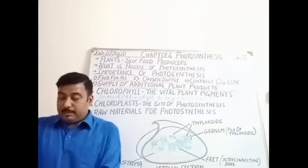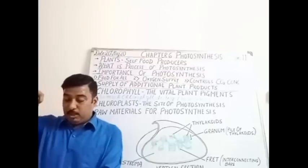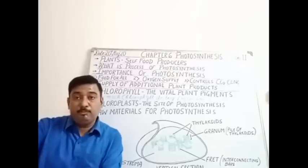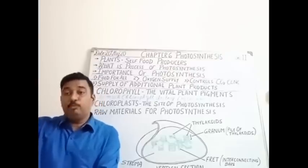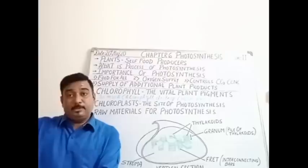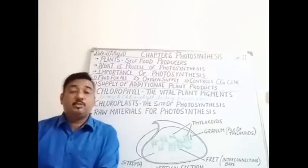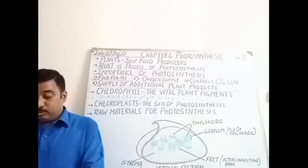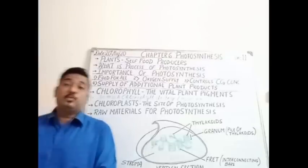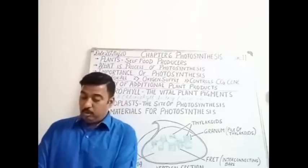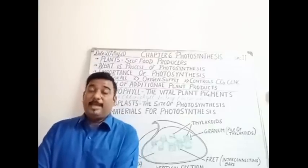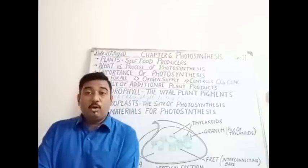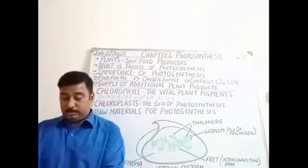Water is conducted upward through the stem to the leaves — from the roots it gets absorbed, moves to the stem, and ultimately moves to the leaves. Through which channels? Through the xylem tissues. Then it is transported to all the cells of the leaves through the veins, to all parts of the plant and branches.